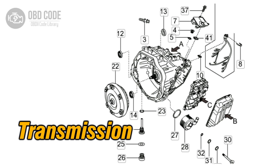The P0700 trouble code is a generic OBD2 code that indicates a problem in the transmission control system. It is often accompanied by other transmission-related trouble codes, which provide more specific information about the nature of the issue. The P0700 code itself simply serves as a request from the Transmission Control Module (TCM) or Powertrain Control Module (PCM) to turn on the check engine light (CEL) to alert the driver to a potential problem with the transmission.